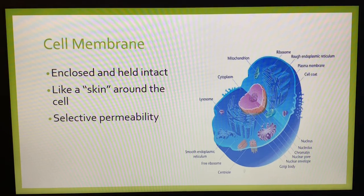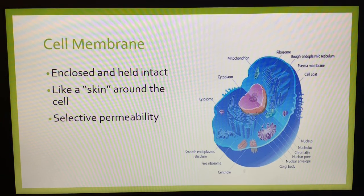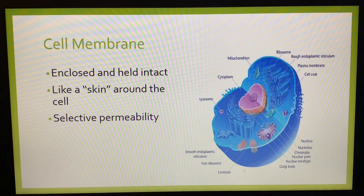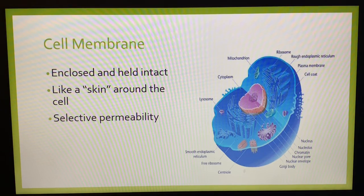The cell is enclosed and held intact by the cell membrane, which is also referred to as the plasma, cytoplasmic, or cellular membrane. Structurally, it is a mosaic composed of large molecules of proteins and lipids. The cell membrane acts like a skin around the cell, separating its contents from the outside world. It regulates the passage of nutrients, waste products, and secretions because of its property of selective permeability — only certain substances may enter and leave the cell.